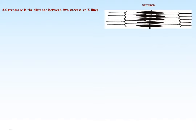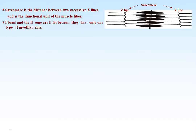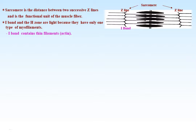The sarcomere is the distance between two successive Z lines and is the functional unit of the muscle fiber. The I band and H zone are light because they have only one type of filament: the I band contains thin filaments only, while the H zone contains thick filaments only.